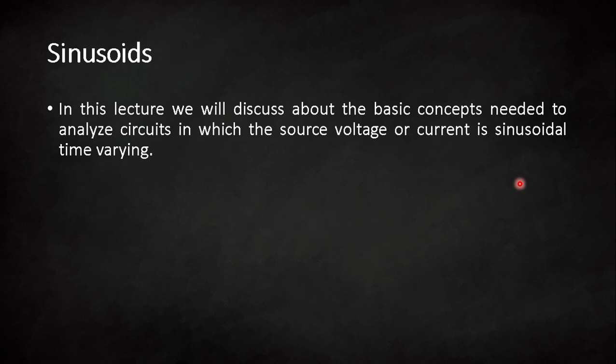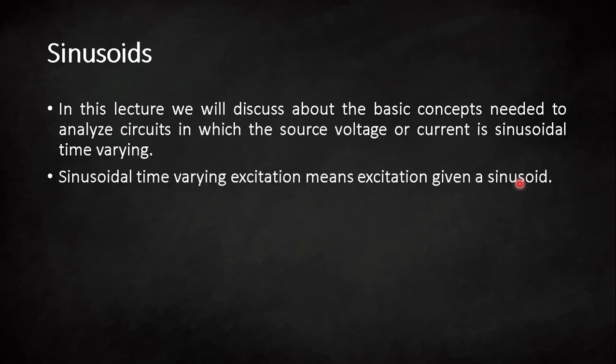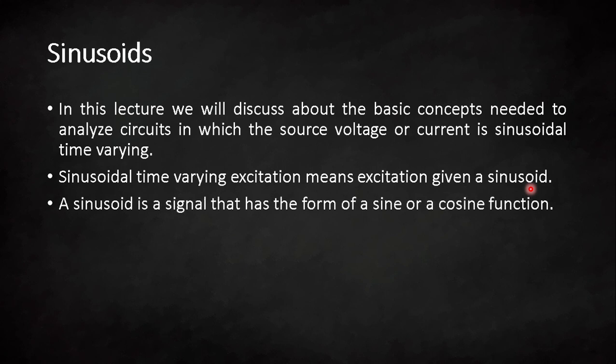In this lecture, we are talking about a time-varying sinusoidal signal — either a voltage signal or a current signal — which is given to an electrical circuit, and how the circuit behaves. In today's lecture, we are going to stick with the definition of what is a sinusoid.